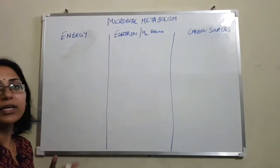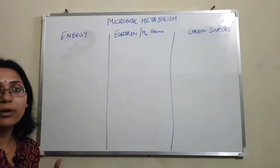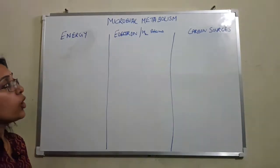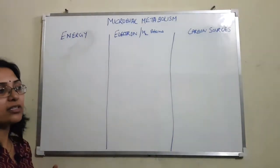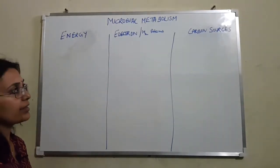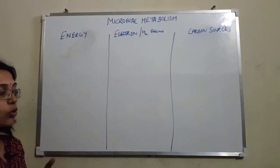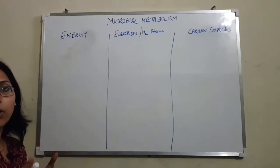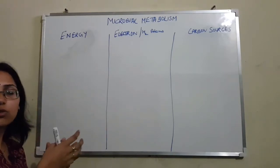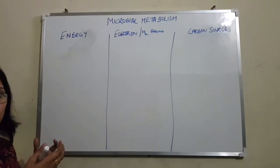So how they obtain these electrons and hydrogen atoms, how they obtain their carbon sources — whether they are able to fix carbon dioxide into more complex carbohydrates, or they require organic or inorganic carbon sources directly, or whether they are able to use light as the energy source or they require chemical compounds for their energy — all of this combined defines microbial metabolism.